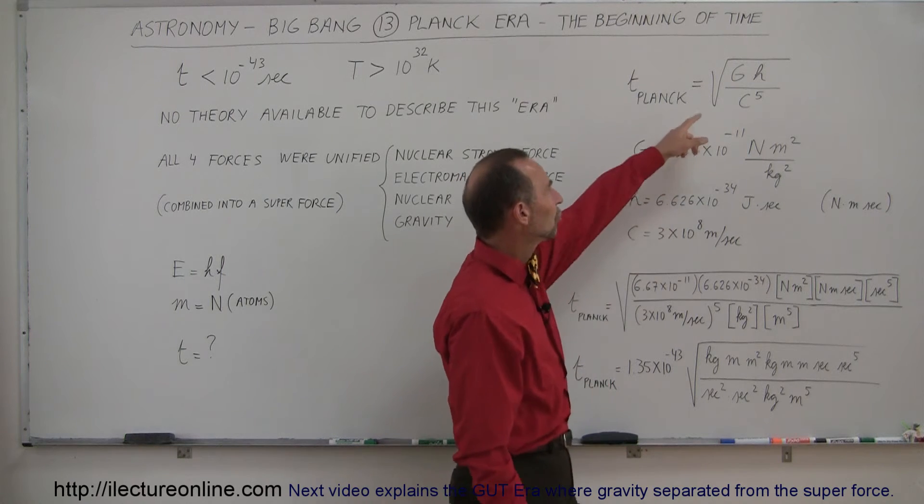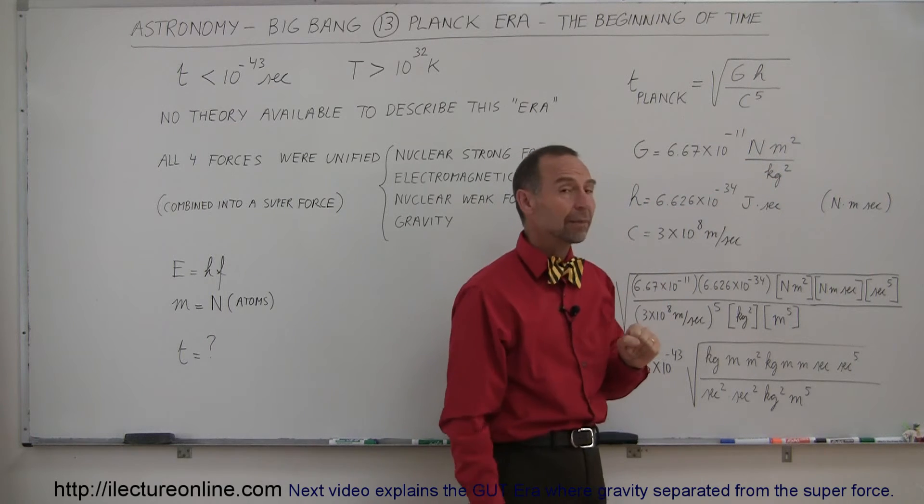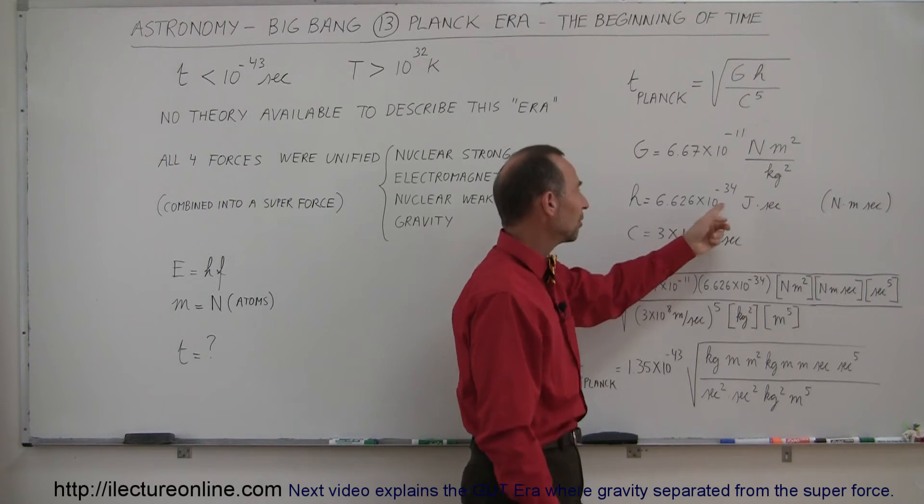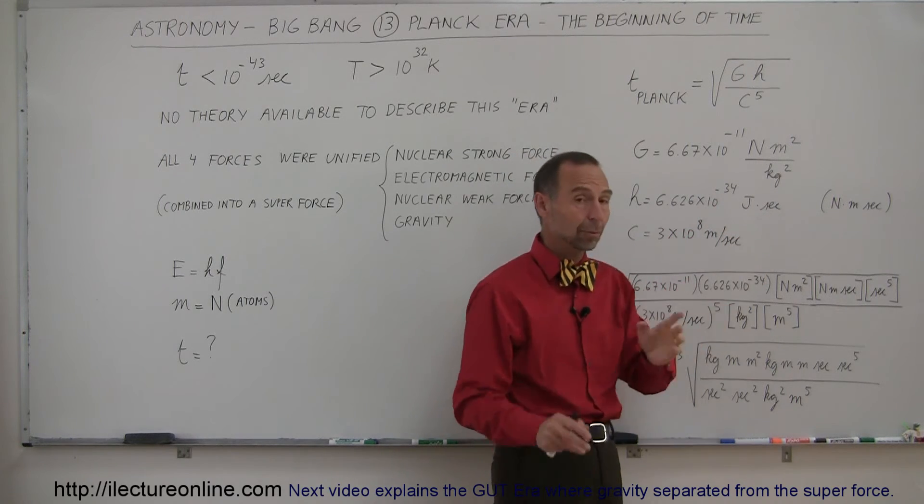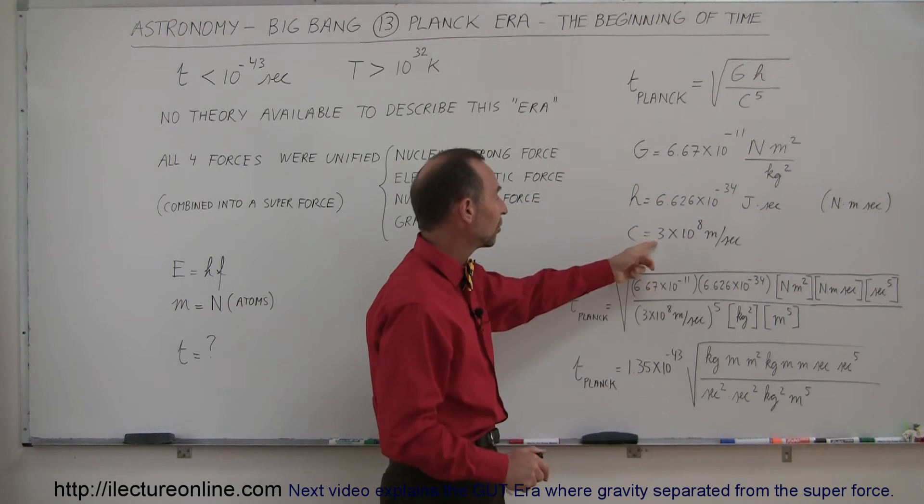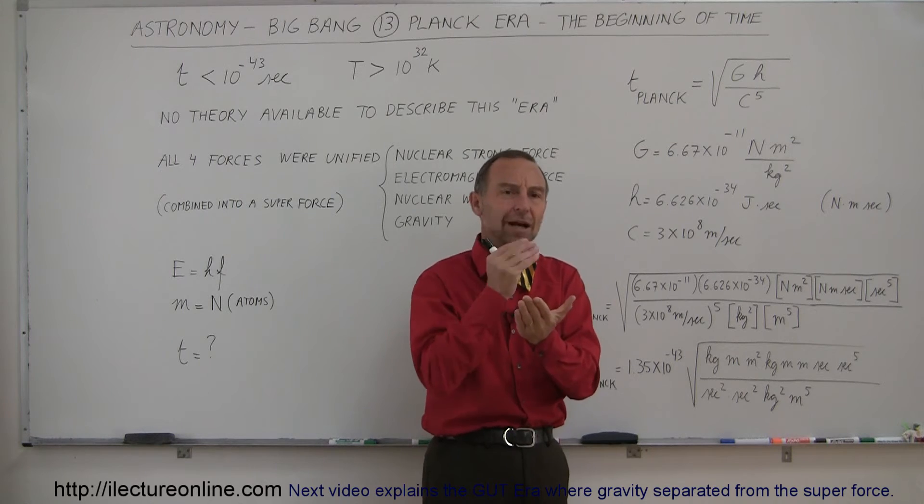So they took those units and started playing around with them until they ended up with something that was equal to time, equal to seconds. And so knowing that G is equal to 6.67 times 10 to the minus 11 newtons meters squared per kilogram squared, and that h Planck's constant is 6.626 times 10 to the minus 34 joules times seconds, and remembering that a joule is a newton meter, and knowing that the speed of light is 3 times 10 to the 8 meters per second, how do you combine those things to come up with something that is equal to time?